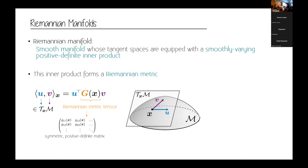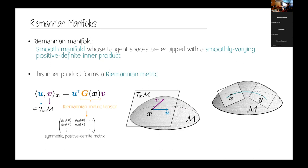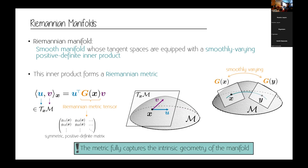For surfaces in R3, curvature defined the complete geometry of the manifold — and you have a mapping between the Riemannian metric and curvature, so they correspond to one another for surfaces in R3. But the Riemannian metric is more general: it works for any dimension and any kind of Riemannian manifold. Importantly, this metric is smoothly varying — when you change tangent space, the metric changes smoothly as well — and it fully captures the intrinsic geometry of the manifold.